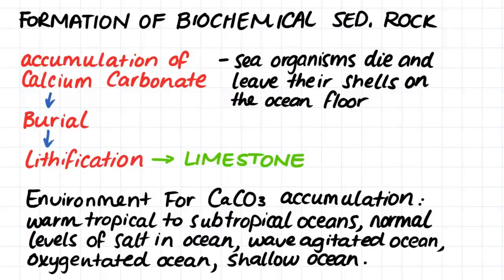These conditions include warm oceans, which are tropical or subtropical, with normal salinity of the marine water, which are wave agitated and oxygenated and often shallow waters. A good example of this type of environment, which actually exists today, would be the Great Barrier Reef. This accumulated carbonate is then covered and undergoes lithification much the same as the clastic sedimentary rock. This process is known to often produce a rock called limestone.